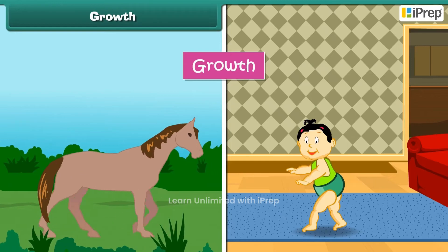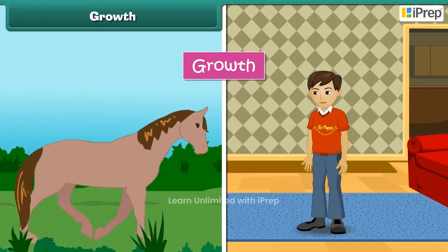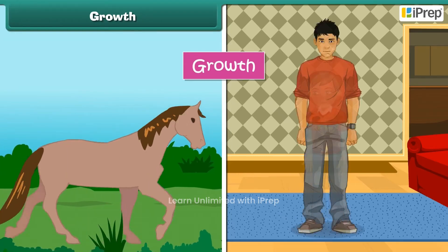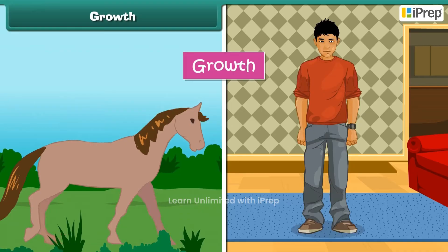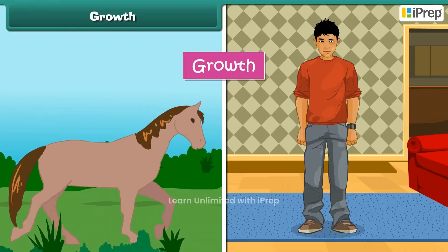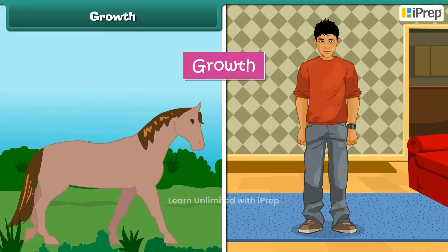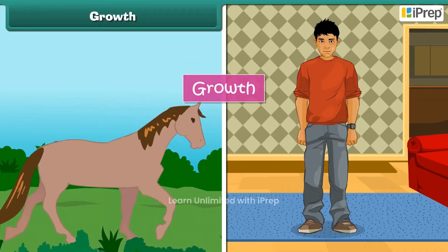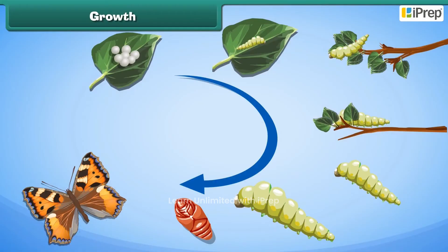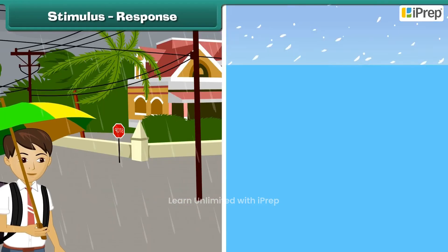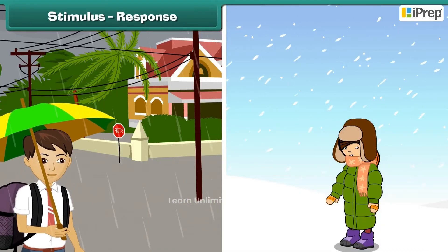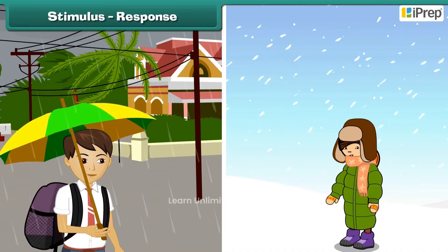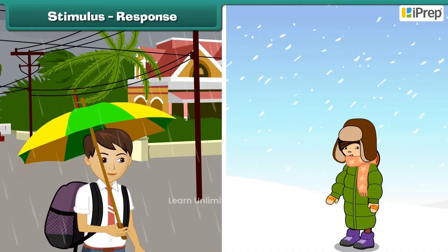All living things grow with time. Some living things grow bigger and larger with time — for example, horses and human beings. Some living things change their form with time — for example, butterflies.